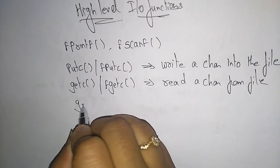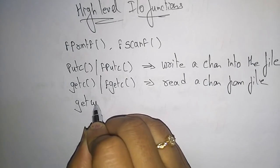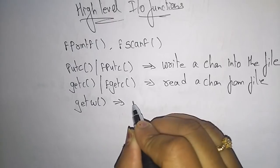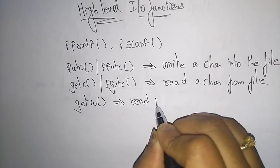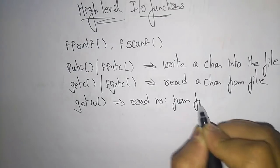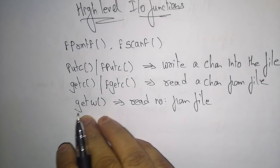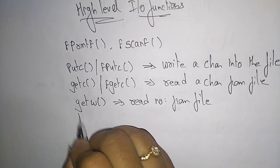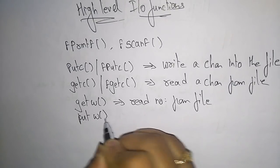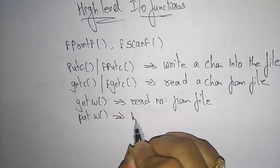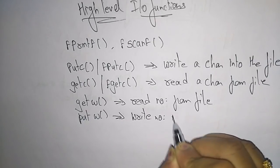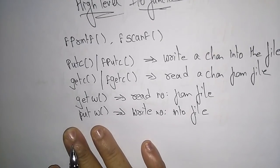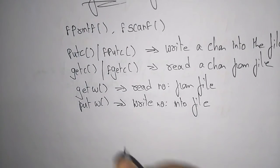Next, getw. getw is used for reading integers — it means read a number from a file. And putw means write a number into a file.